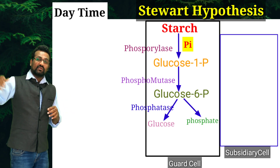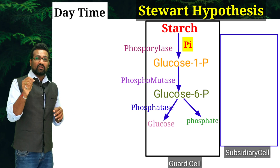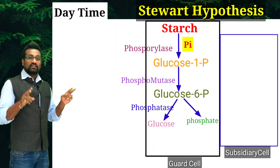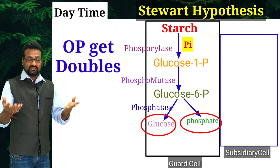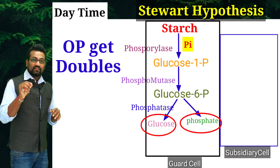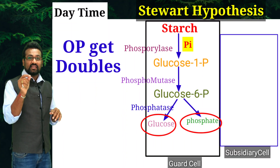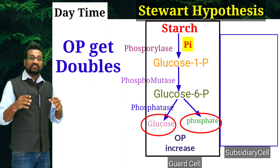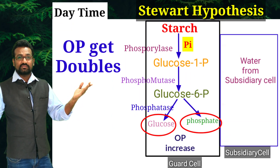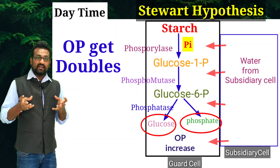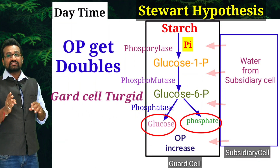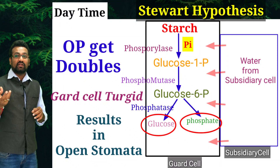In the basic theory, we studied that glucose-6-phosphate or glucose-1-phosphate had osmotic potential. But after cleaving the phosphate from glucose, the osmotic potential gets doubled — this is the key differentiating point from the basic theory. The glucose and phosphate have separate osmotic potentials which together are doubled compared to before, and this causes movement of water from the subsidiary cell into the guard cell. Once water enters the guard cell, it becomes turgid and the slit between the guard cells opens — the stomata opens during daytime.